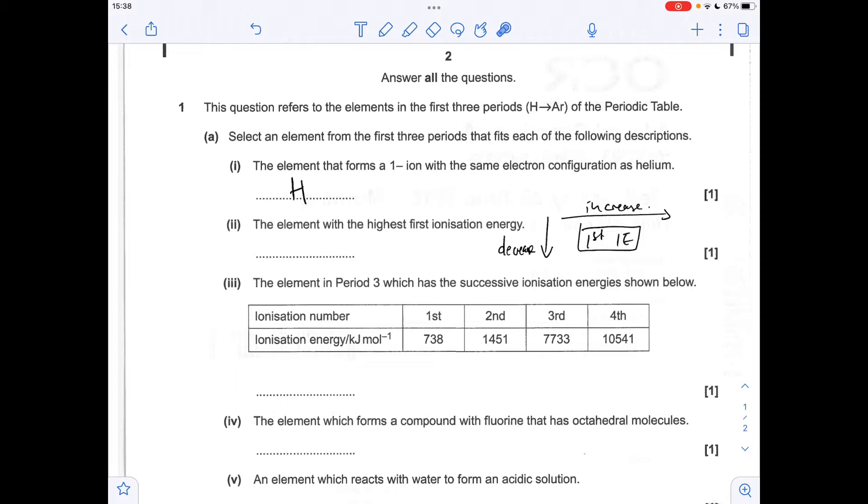Moving on to part two, so the trend in first ionisation energy, down the group it decreases, across a period it increases. So basically we want the element in that top right hand corner, and so the answer is helium.